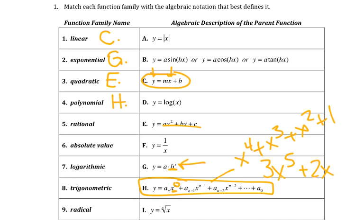Rational is a fraction, because fractions are rational numbers, so that would be f — that's the only one that's a fraction. Absolute value: those bars mean absolute value, so that one's a.